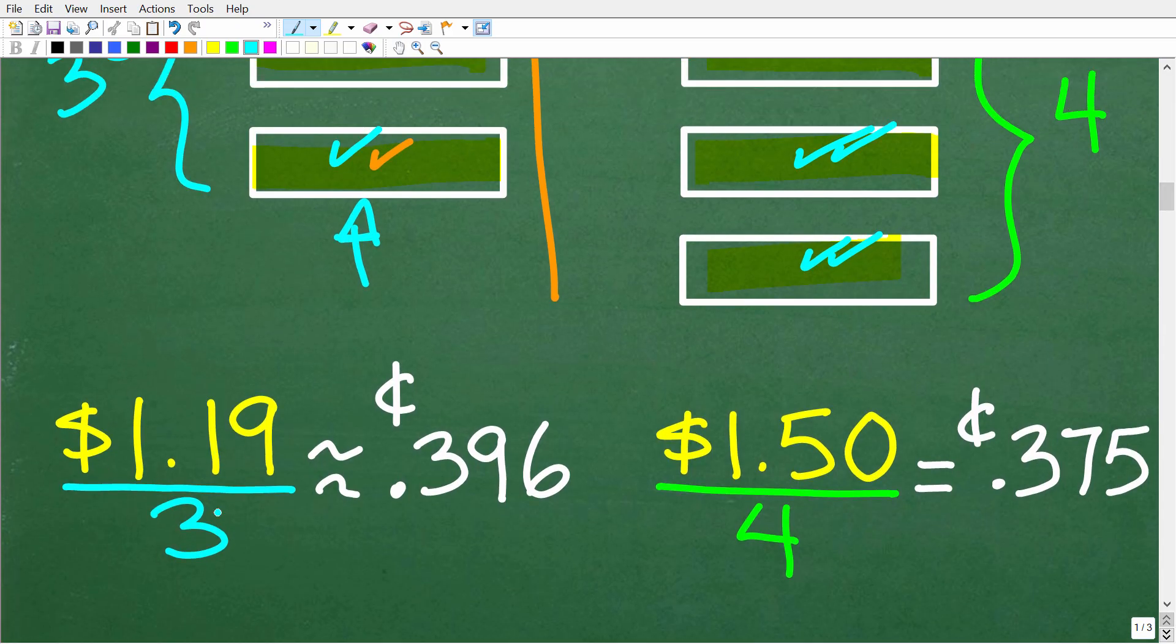So $1.19 divided by three is going to be what? Well, that's going to be 0.396. Now, here I have cents, but actually, I'm going to correct this. This is actually dollars.